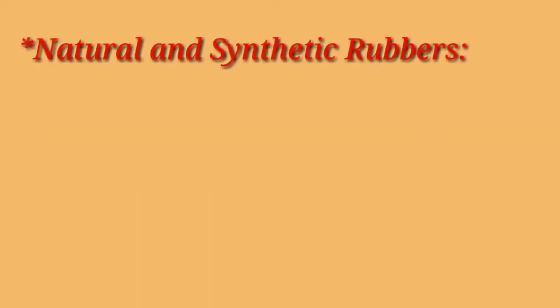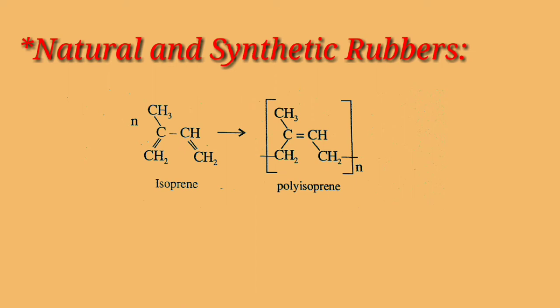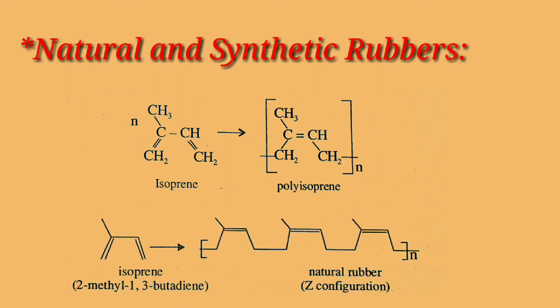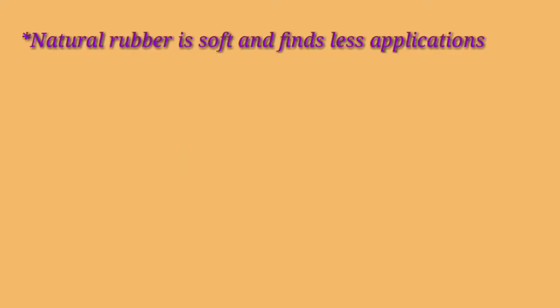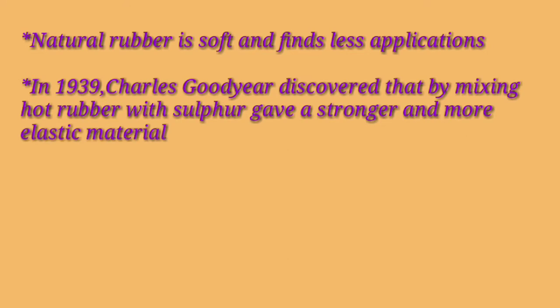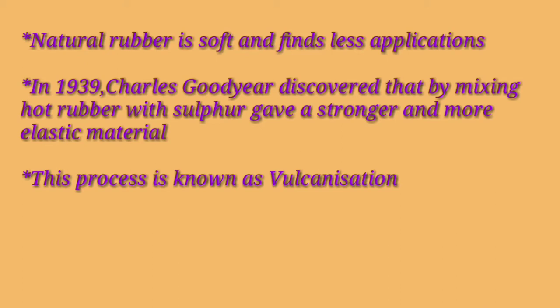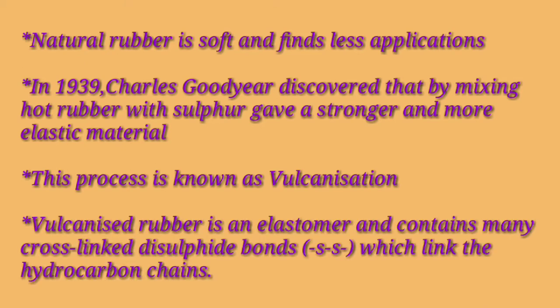Next is natural and synthetic rubbers. Natural rubber is a terpene which is composed of repeating isoprene units. The polymer is unsaturated, having Z configuration at all the double bonds, which makes rubber soft and elastic. Natural rubber is soft and finds fewer applications. In 1839, Charles Goodyear discovered that mixing hot rubber with sulphur gave a stronger and more elastic material. This process is known as vulcanization. Vulcanized rubber is an elastomer and contains many cross-linked disulfide bonds which link the hydrocarbon chains.